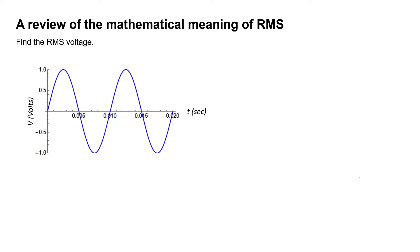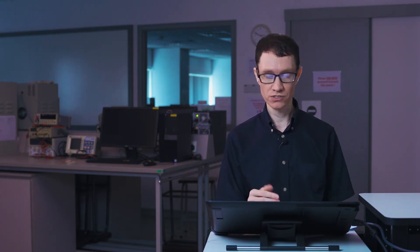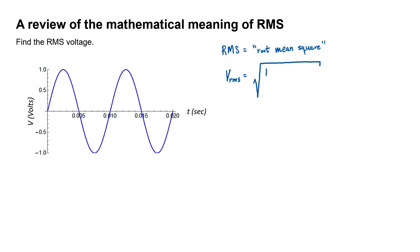Let me show you why. We're going to first take a look back at the mathematical meaning of RMS. Here we have an arbitrary waveform plotted — in this case it's a sine wave — but we're going to find the RMS voltage not by using the formula we already know of dividing the amplitude by the square root of 2, but instead by using the integral definition of RMS voltage. RMS stands for root mean square, so let's do exactly that. We're going to square the waveform and then take the square root over one period: there's the root, there's the mean, and there's the square.